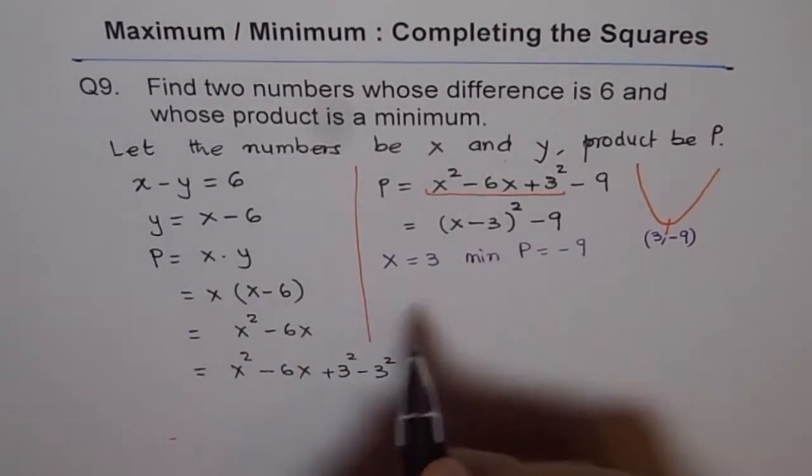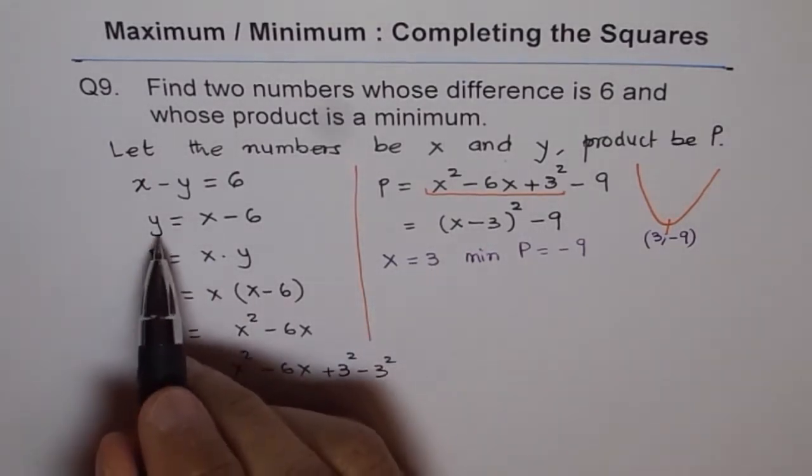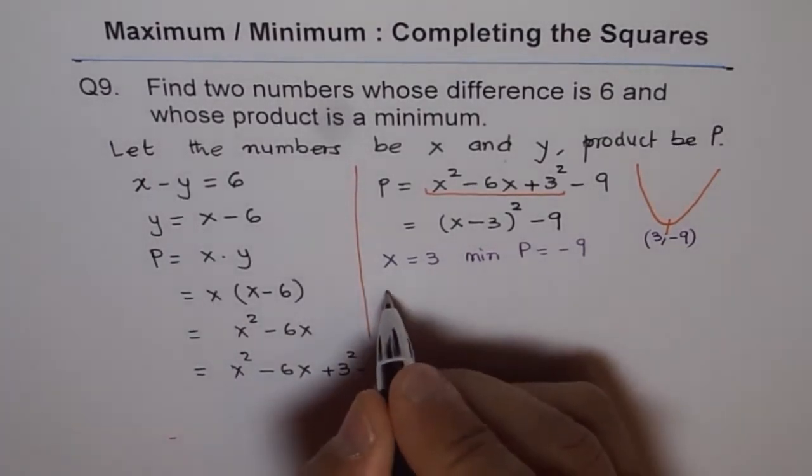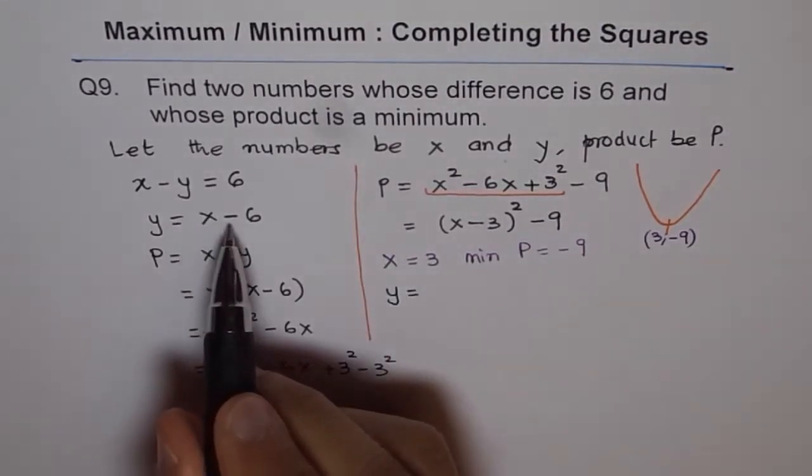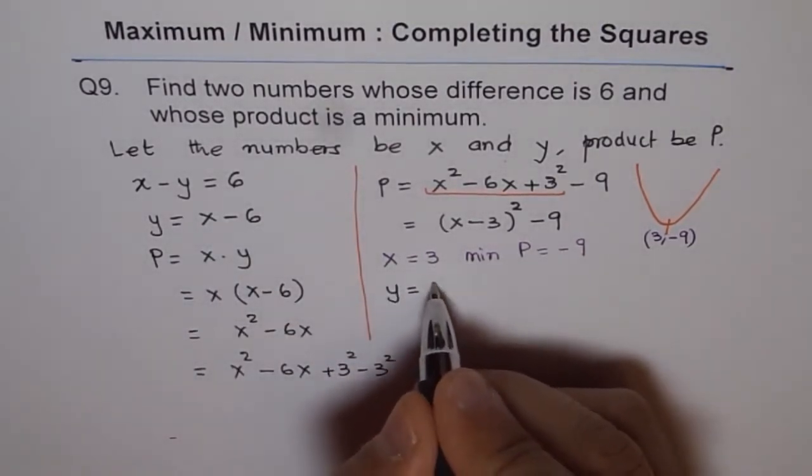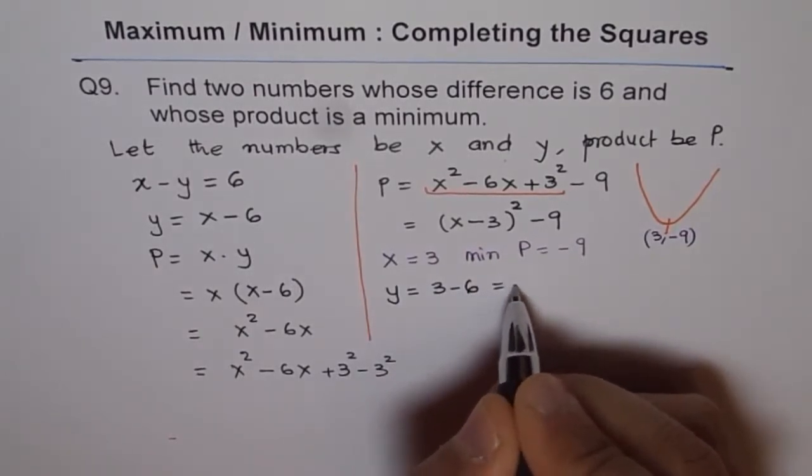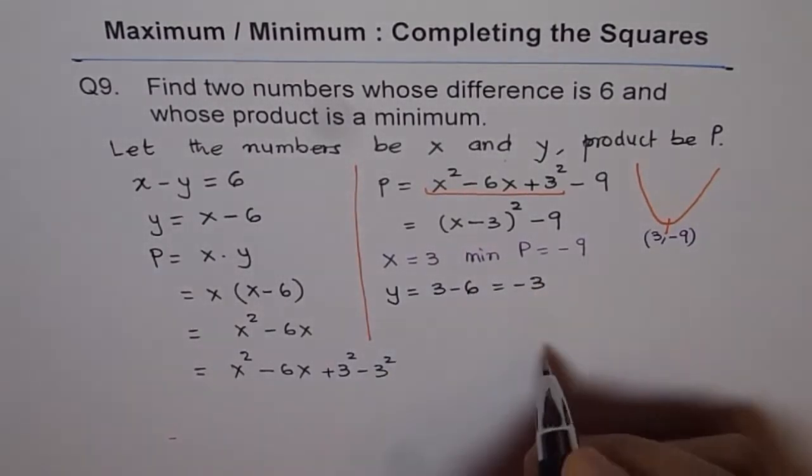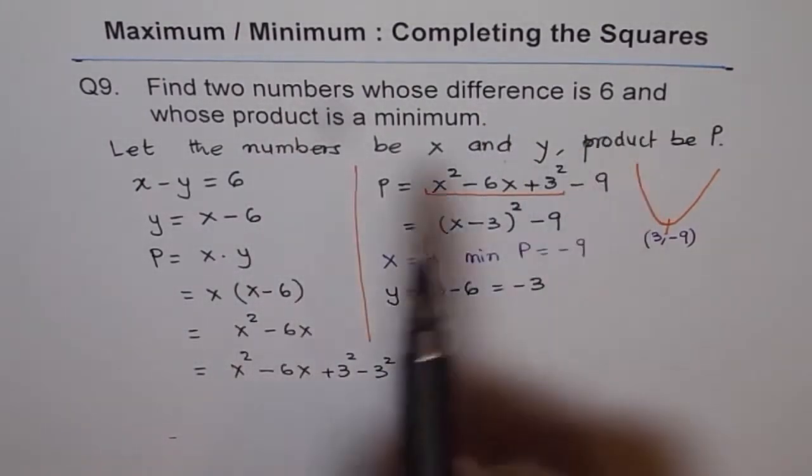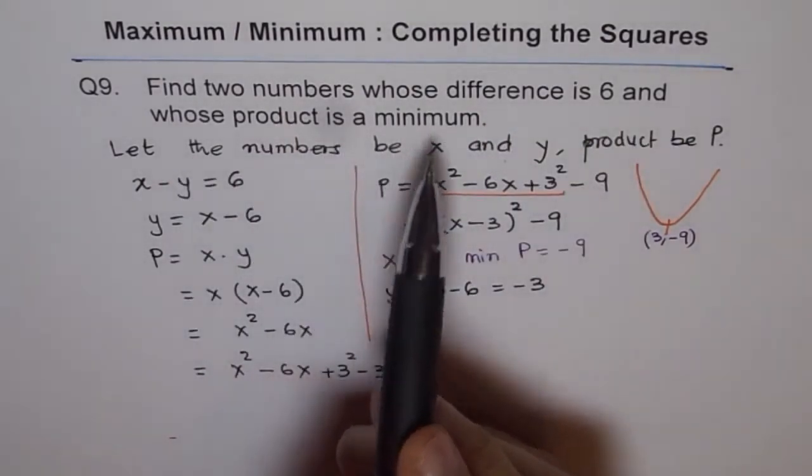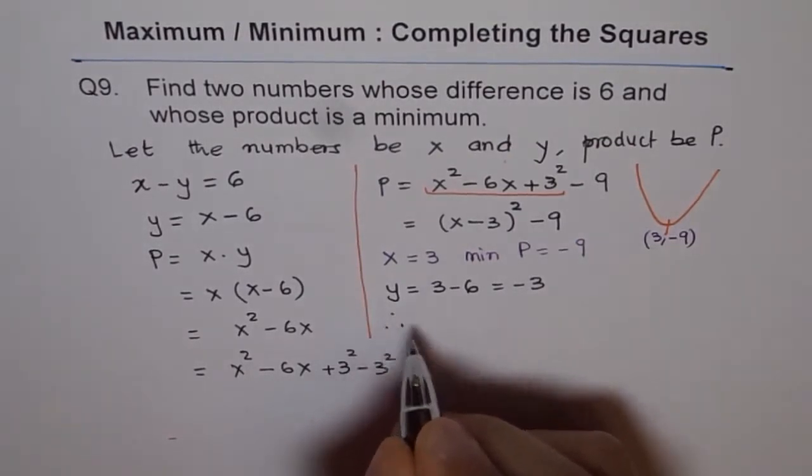If x is three, then what is the value of y? y equals x minus six, that means three minus six, which is minus three. Therefore, the two numbers are minus three and plus three.